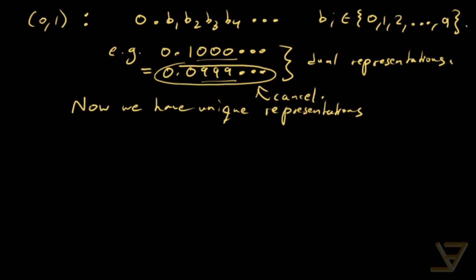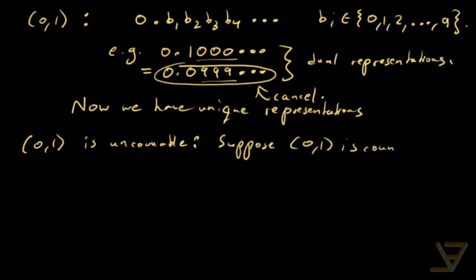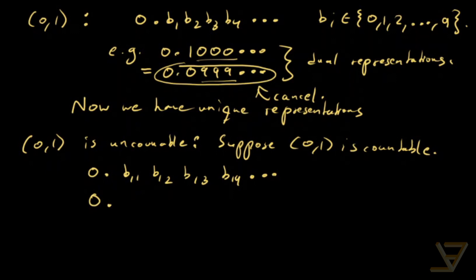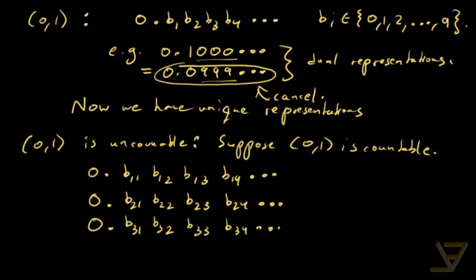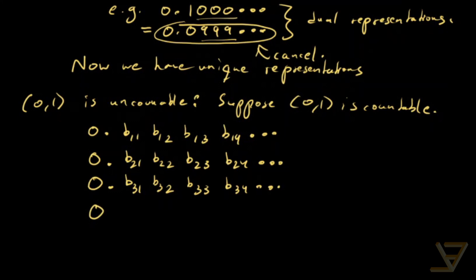We're going to prove that (0,1) is uncountable by contradiction. Suppose otherwise — suppose (0,1) is countable, so we can list it out. Let's call that list: 0.b11 b12 b13 b14 ..., then 0.b21 b22 b23 b24 ..., then 0.b31 b32 b33 b34 ..., then 0.b41 b42 b43 b44 ..., and so on.